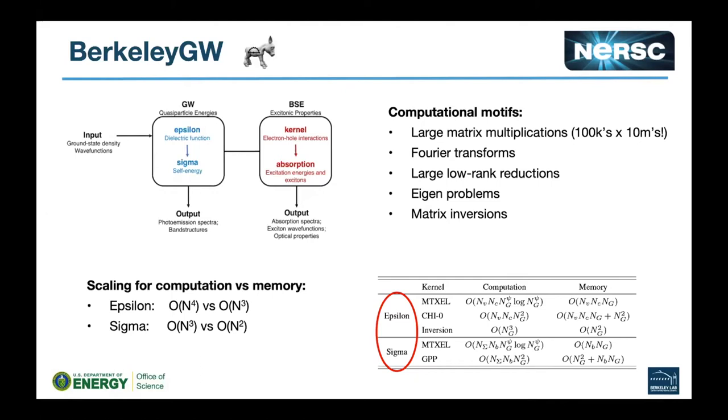The table down below shows some of the kernels inside Epsilon and Sigma and their computational and memory requirements. If you look at the scaling, Epsilon and Sigma are a bit different. Epsilon has a quartic scaling in terms of computation and cubic for memory. It's a bit lower for Sigma.